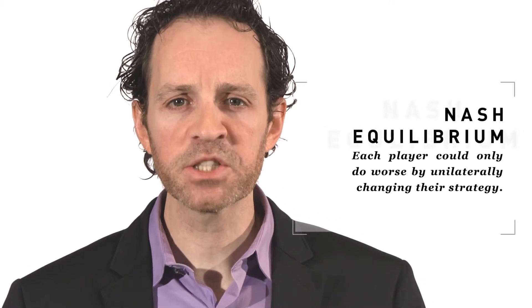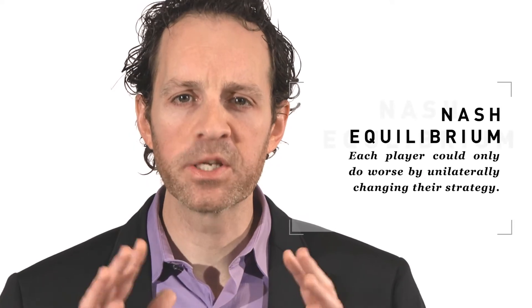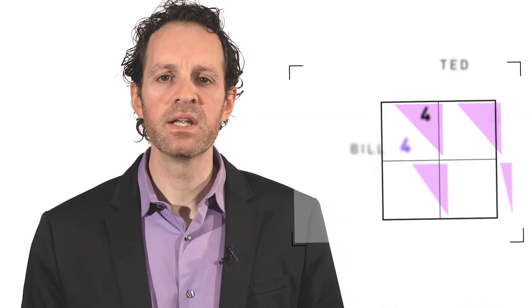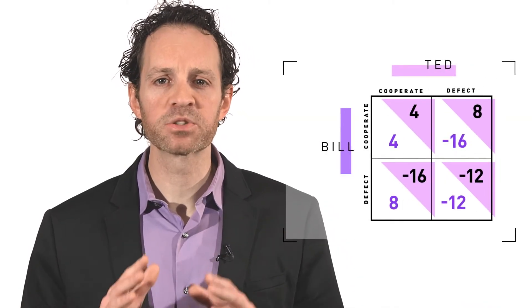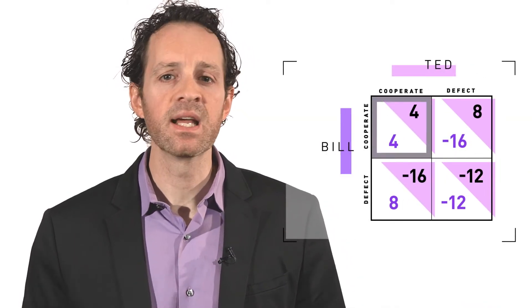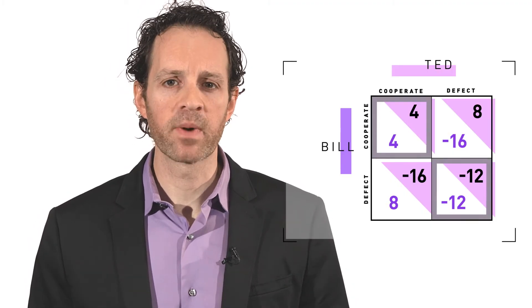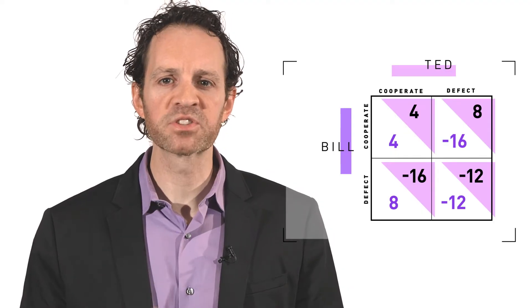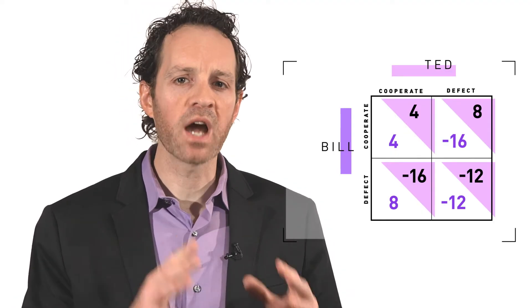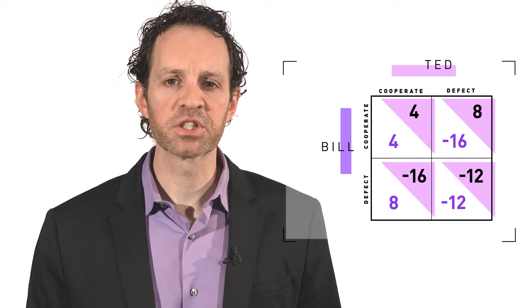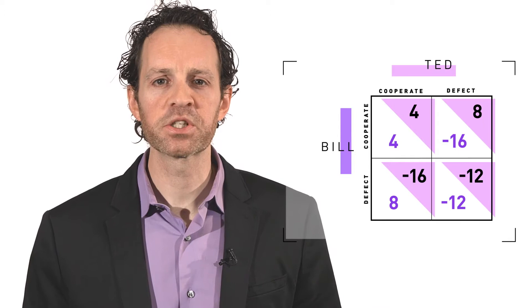The outcome — defect, defect — is a Nash equilibrium, because each player could only do worse by unilaterally changing their strategy. Notice that Bill and Ted would be better off if they had each chosen to cooperate by remaining silent, instead of both choosing to defect. Indeed, the dilemma in this situation is that both players are better off selecting defect because they cannot be sure the other person will select cooperate, even though a double defection is worse for both of them than a double cooperation would have been.